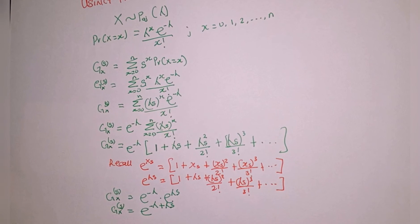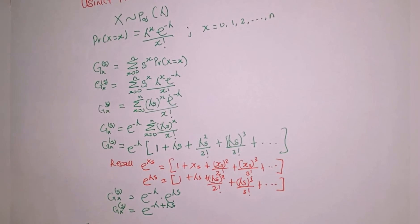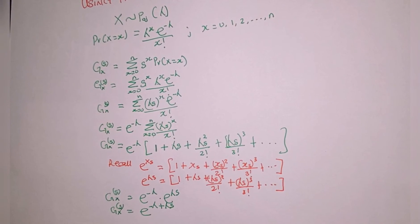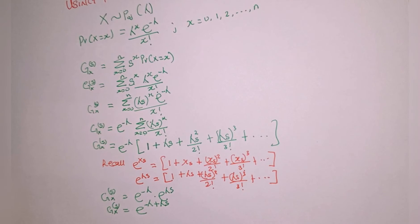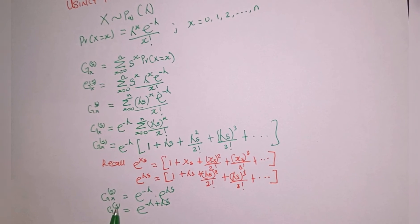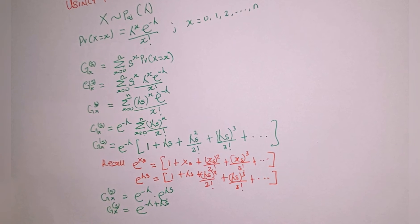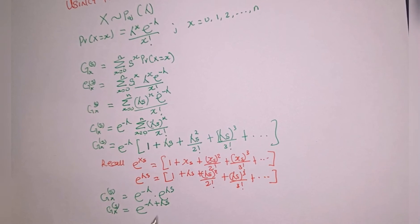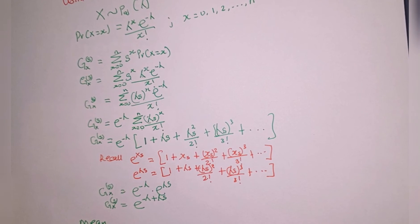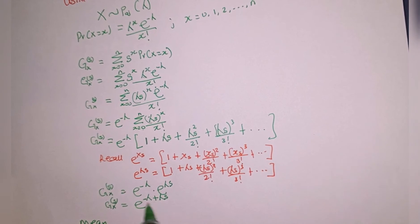This is the generating function of a Poisson distribution. Now we are asked to find the mean and the variance. We have already found G sub X of s to be e raised to the power of minus lambda plus lambda s. To get the mean, which is the expected value of X, we take the first derivative of G sub X of s and then substitute s equal to 1.